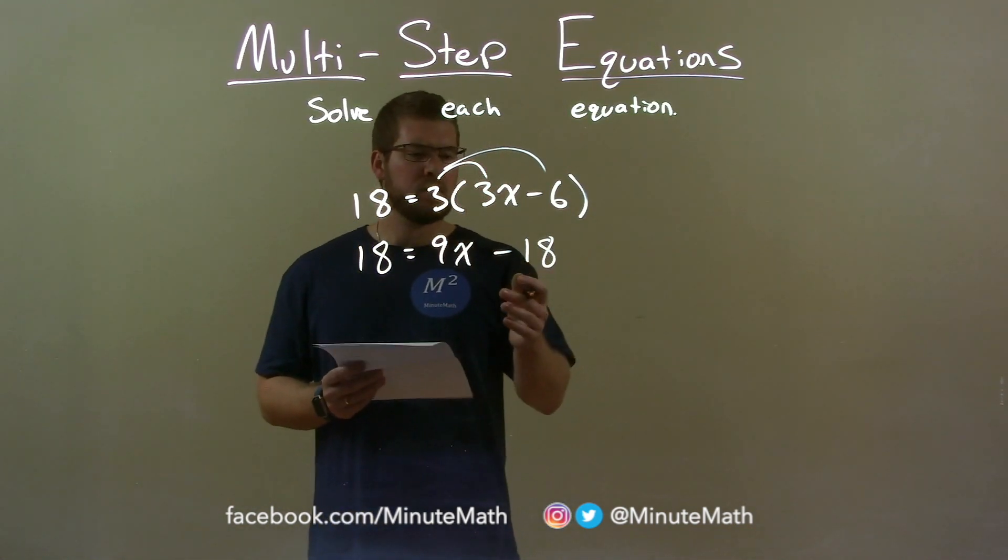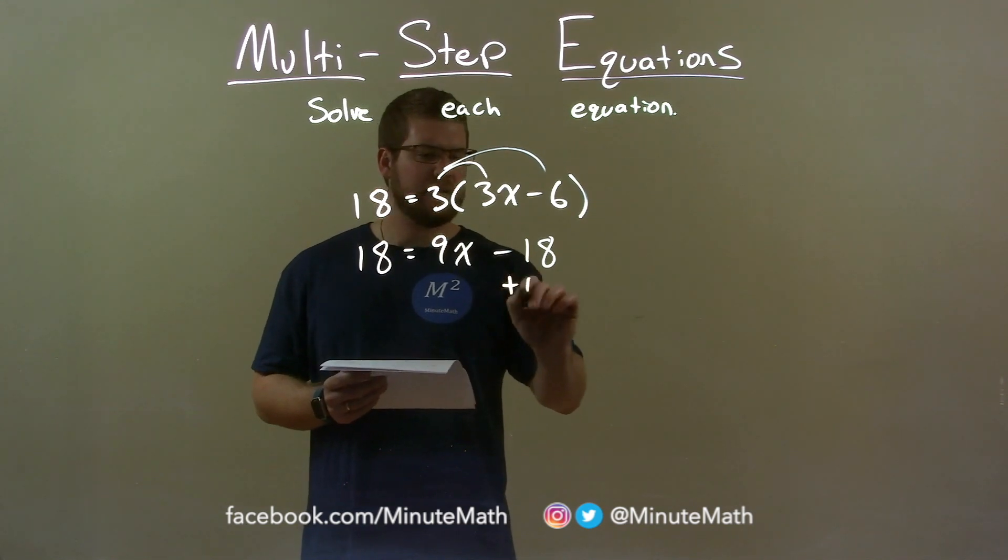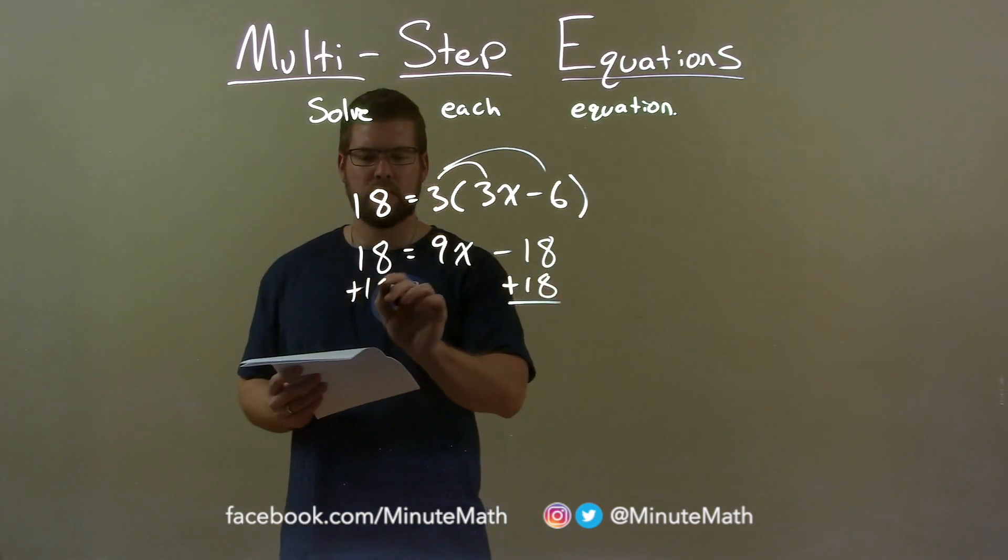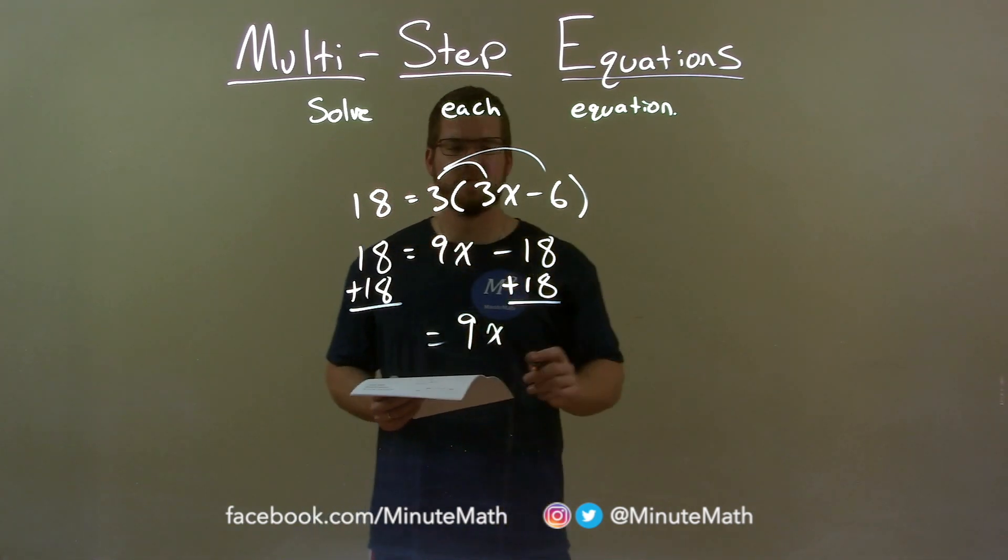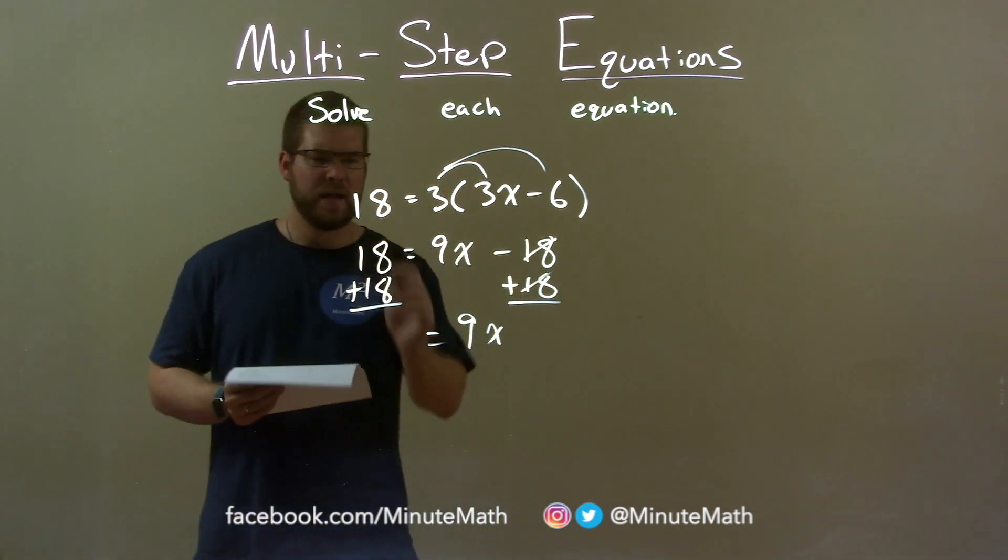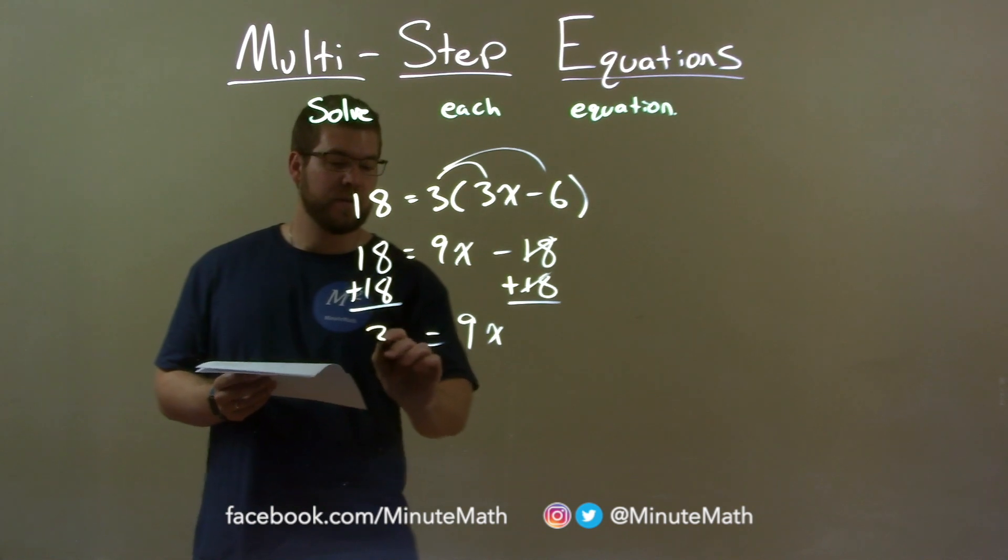My next step is to add 18 to both sides. This helps get x by itself, so 9x on the right—remember the 18's canceled—and 18 plus 18 is 36.